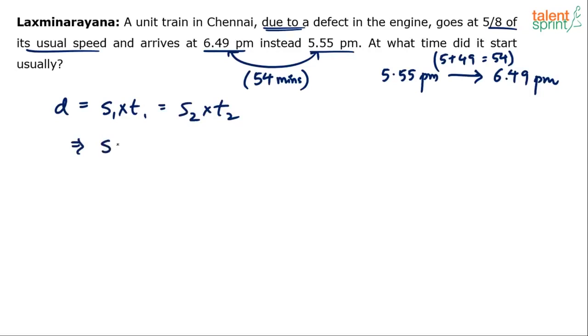Let's assume usual speed is S, so usual time is T. In the next case, usual speed is 5/8 of S, 5/8 × S. And the usual time is T + 54. Remember it took 54 minutes extra, it was late by 54 minutes. It's not early, it was late by 54 minutes. So if usually it takes T minutes, this time it took T + 54 minutes.